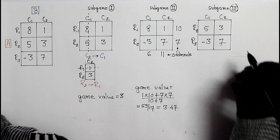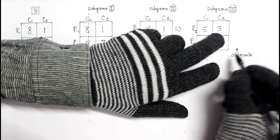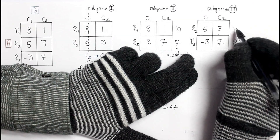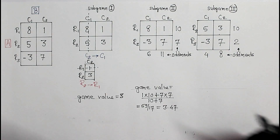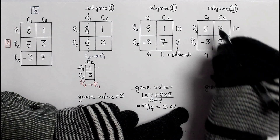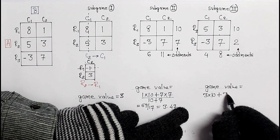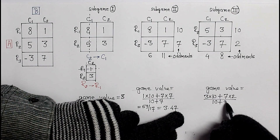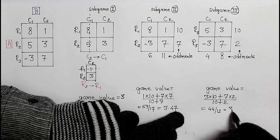For sub game 3, we again use the arithmetic procedure — calculating odd means. Between 5 and 3, the difference is 2; between −3 and 7 the difference is 10. Cross values: 5 and −3 give 8; 3 and 7 give 4. The column differences cross to give values of 10 and 2. The game value is: (5×(−3) cross terms) computed as (3×10 + 2×7) divided by (10+2) = 30 plus 14 = 44 by 12, equals 3.67.